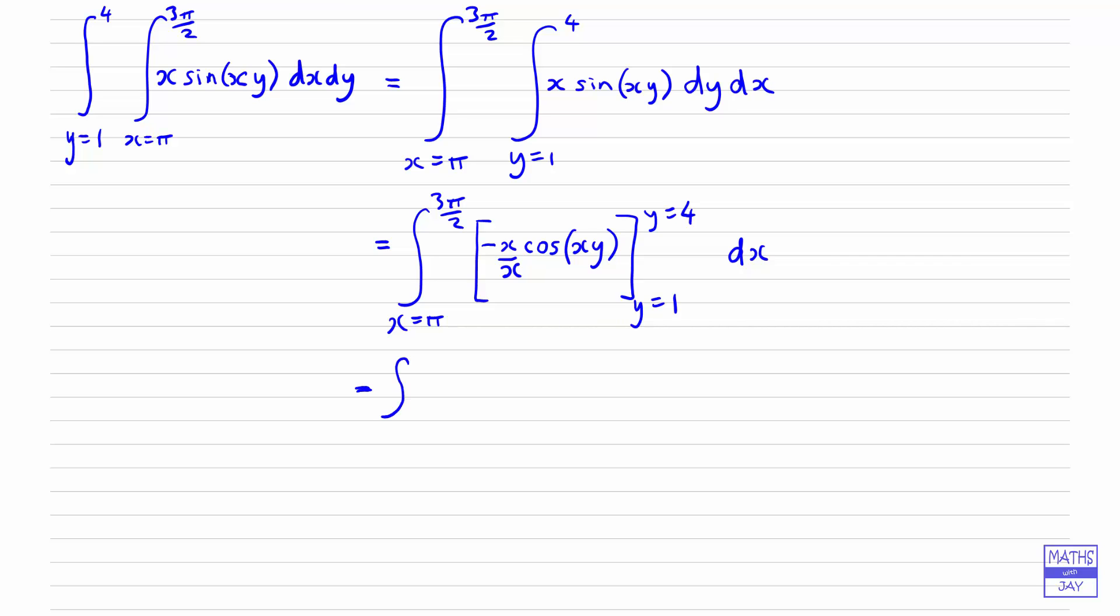So we can simplify that, x going from pi to 3pi by 2, and the x over x will cancel, so we've just got minus cos(xy) to substitute our limits into, y equals 4, and y equals 1 there, dx.